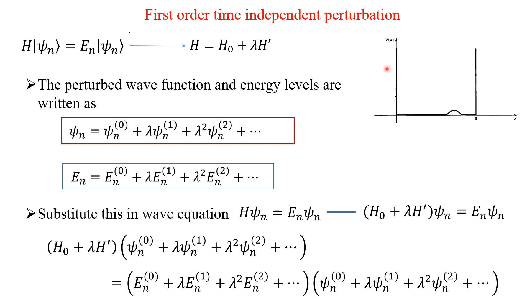For that, we will take our popular example, the particle in a box problem. We have a particle inside the box which has length A. The y-axis is the potential. At a particular point of time, we are disturbing the system. You can see this small bump — we are perturbing the system. We are going to find out the perturbed wave function and perturbed energy.